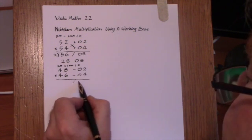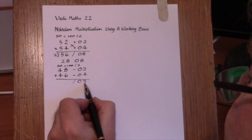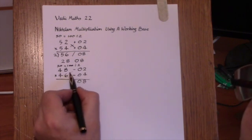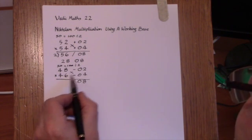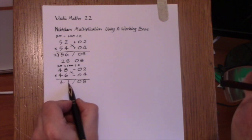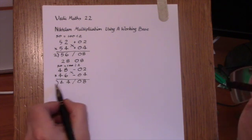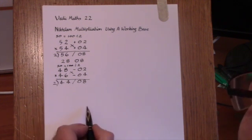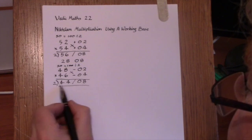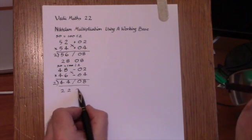And on the right, multiply 2 times 4 is 8. On the left, we cross-subtract. 46 take away 2 is 44. And then, as before, divide the left-hand part by 2, giving 2208.